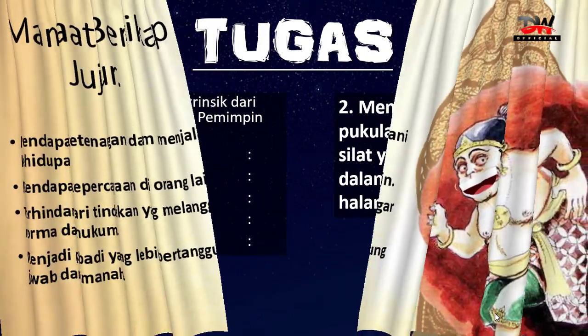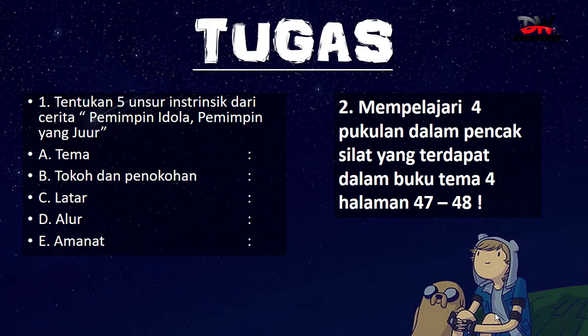Baiklah anak-anak, materi yang Bagong sampaikan sudah selesai. Sekarang waktunya mengerjakan tugas. Yang pertama, tentukan lima unsur instrinsik dari cerita 'Pemimpin Idola, Pemimpin yang Jujur', yaitu tema, tokoh penokohan, latar, alur, dan amanat. Carilah lima hal ini dari cerita tersebut. Ini tidak terlalu sulit karena anak-anak sudah membaca sebelumnya, dan jika membaca lagi akan lebih mudah menemukan lima unsur ini.